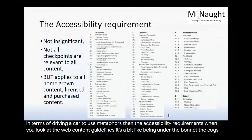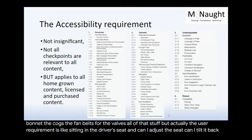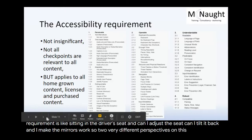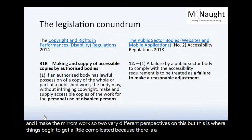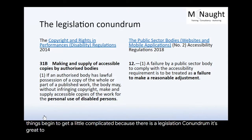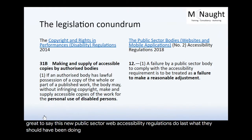This is where things begin to get a little complicated, because there is a legislation conundrum. It's great to say this new public sector Web Accessibility Regulations do what they should have been doing for 20 to 25 years. But here's a conundrum, because a good deal of the content you have on your websites and your VLEs, you don't own the copyright for. So, for example, if you've got eBooks or journal articles where you don't have the IPR, the copyright and rights performance regulations — that's a third bit of legislation — that legislation tells you it is entirely legal for you to take content which you don't have the copyright for but do have legitimate lawful access to.